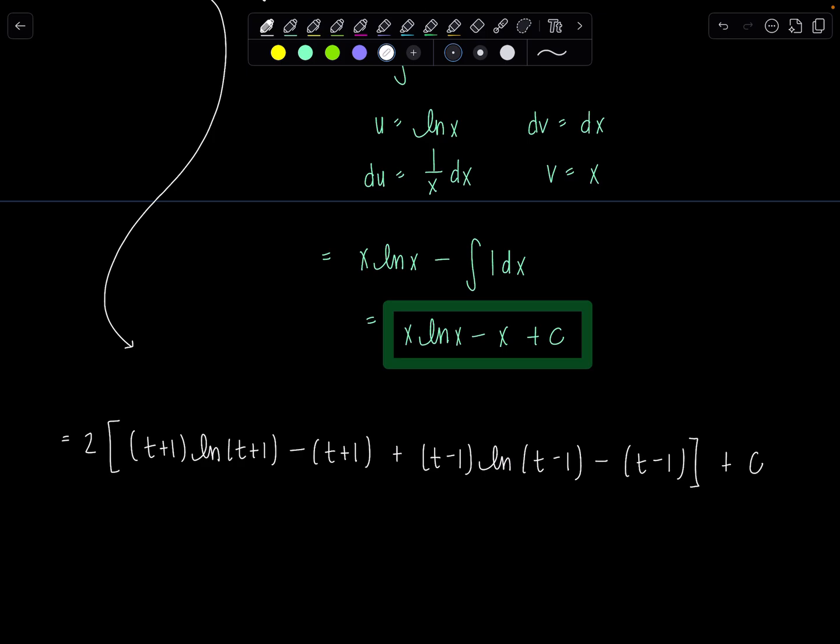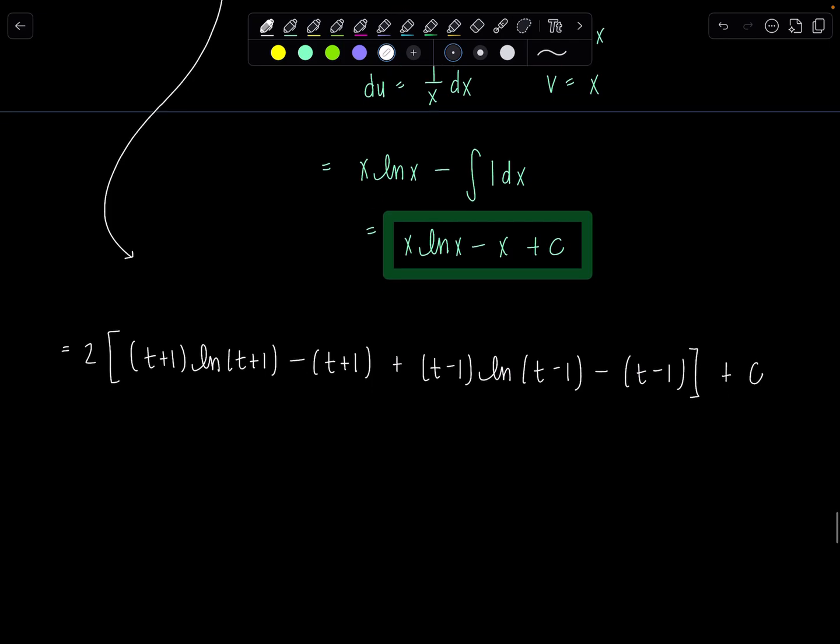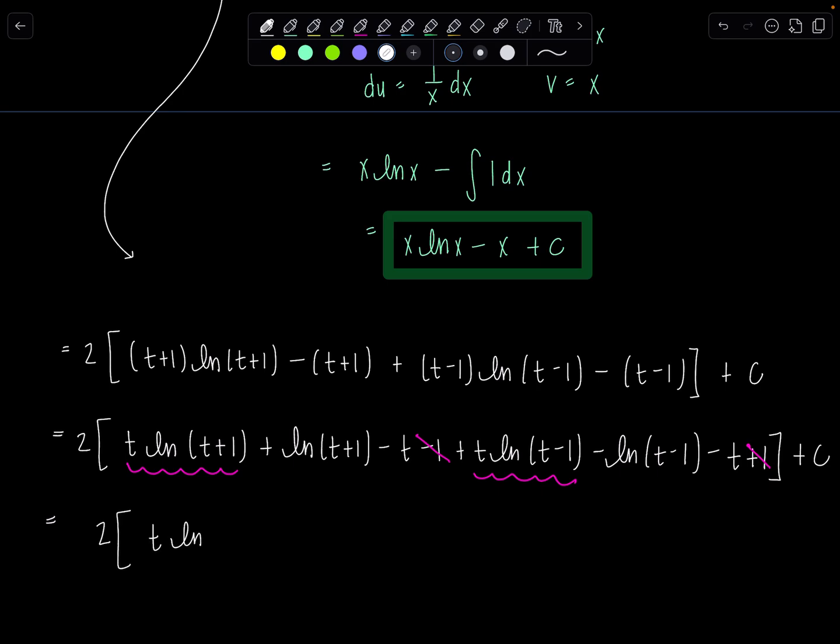Okay, now we just have a lot of cleaning up to do. So I'm going to distribute t plus 1 here, distribute t minus 1, and distribute the negatives. The final answer will clean up quite nicely. I'm going to keep the 2 out there for now. So this would be t natural log t plus 1 plus 1 times natural log t plus 1 minus t minus 1 plus t natural log t minus 1 minus natural log t minus 1 minus t plus 1 plus c. All right, please observe. The ones cancel. What else can we do? Well, both of these natural logs have a t in front of them. I can factor the t out. And then I can write it as natural log of t plus 1 plus natural log t minus 1.